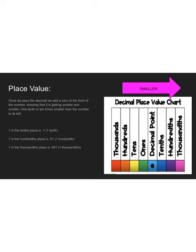Once we pass the decimal again, it's going to look a little flip-flopped. We're actually going to be putting zeros on to the front of the number, which shows it's getting smaller — one tenth the size of the number to its left. A 1 in the tenths place is written 0.1. As I move to the hundredths place, it's 0.01. And thousandths is 0.001. Those zeros are there to hold the place so we know where that 1 is actually located and to show it's getting smaller and further away from 1.